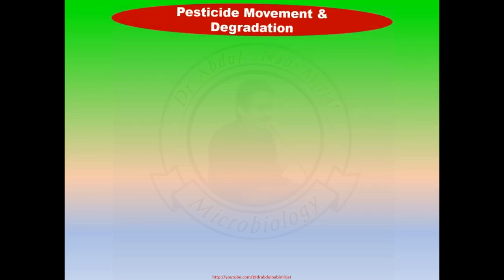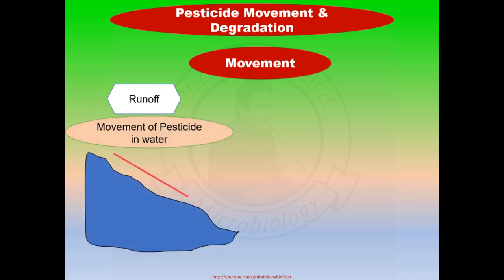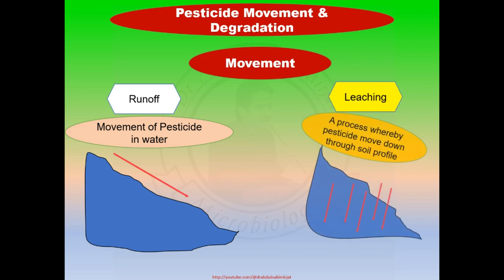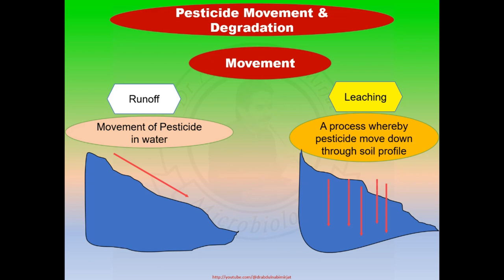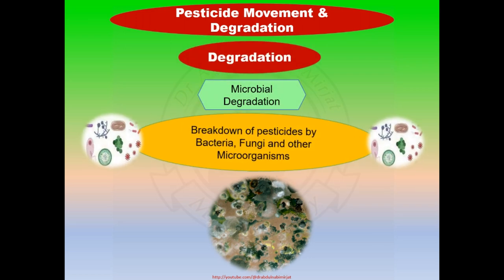Runoff means movement of a pesticide in water. Generally this occurs on downslopes but can also occur on flat or even slightly uphill ground after flooding rain. Leaching, also called percolation, is a process whereby pesticides move down through the soil profile. Microbial degradation means the breakdown of pesticides by bacteria, fungi, and other microorganisms.